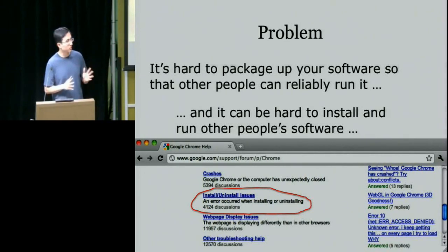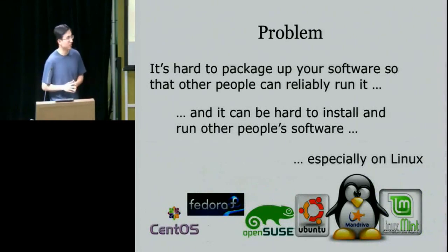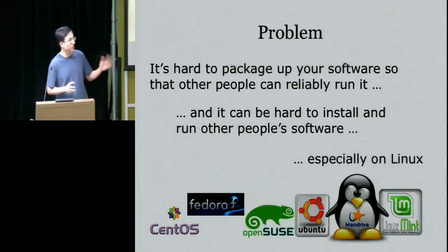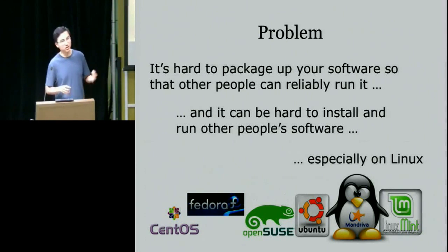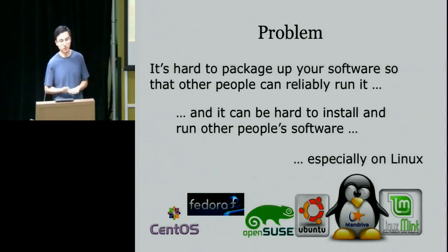These problems of software distribution and installation affect all operating systems, but they're especially bad on Linux-based systems. Linux has all these different distributions, each with their own package managers, conventions, and idioms. This is great for freedom and openness, but it leads to a lot of fragmentation — there's no unified easy way to automatically package your software and have people run it reliably.